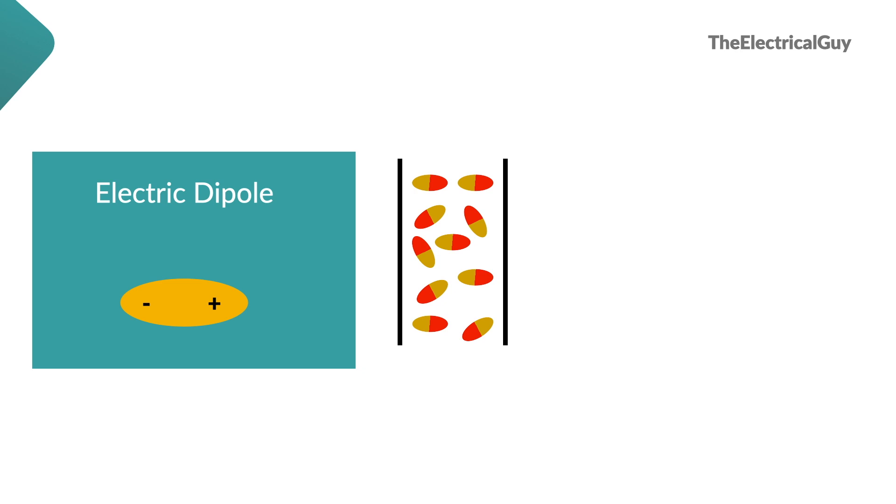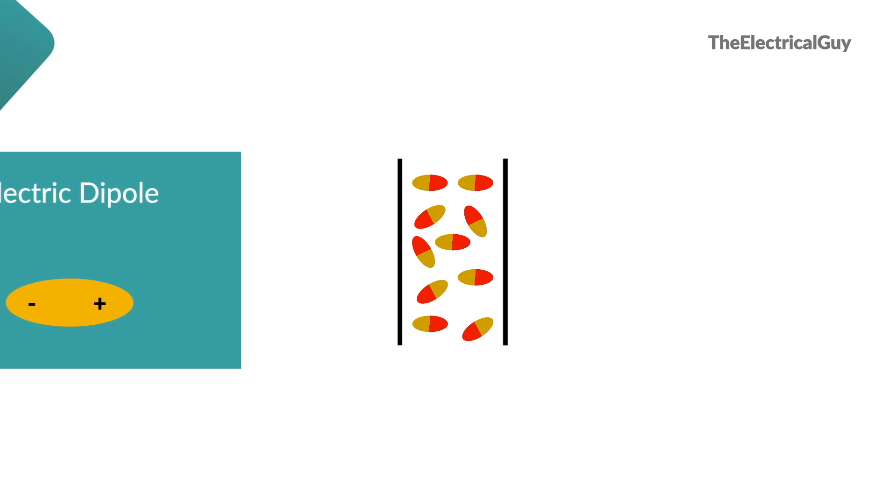Separated by a distance as shown. That is what we call electric dipole. Now normally these molecules are aligned randomly in the plates as shown.